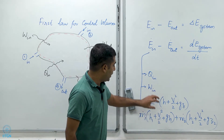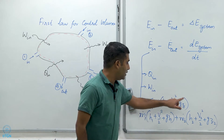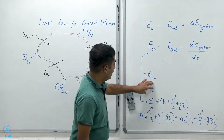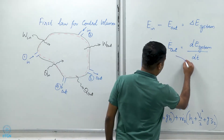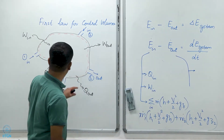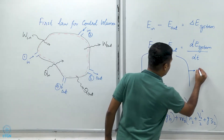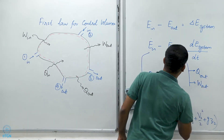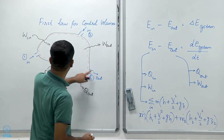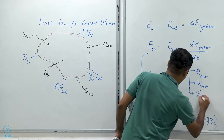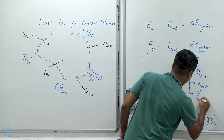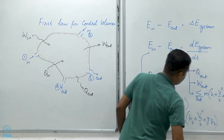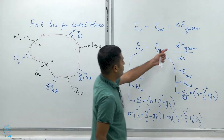For the energy out side, there is a heat interaction Q_out, a work interaction W_out, and also mass leaving, so I write a similar summation over all outlets of M_dot times (H + V²/2 + gz). And the right-hand side is D E_system / DT.